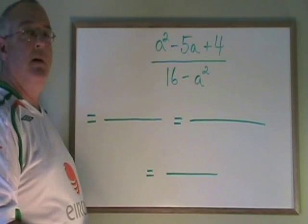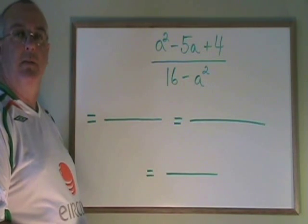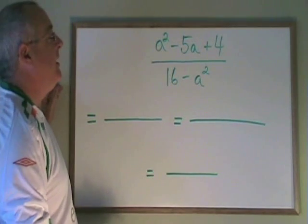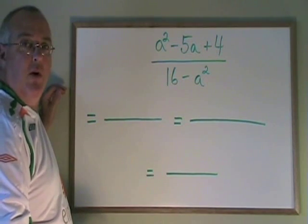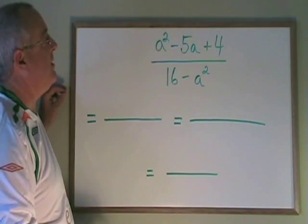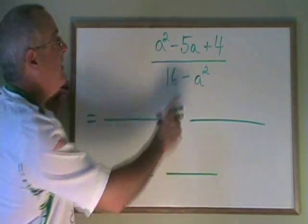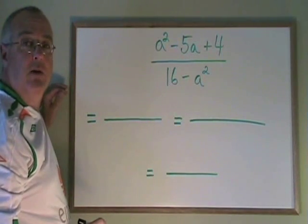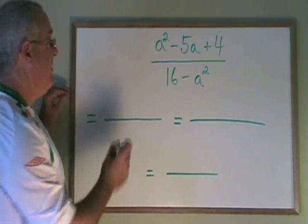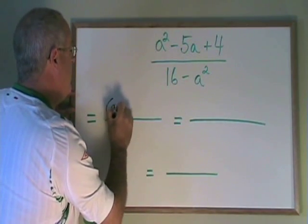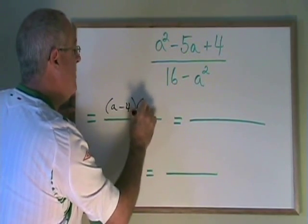Here's another example of an algebraic fraction that needs to be simplified. The first step is to factor. The numerator is a simple trinomial, so I ask myself: what two numbers multiply to give 4 but add to give negative 5? Those numbers are negative 4 and negative 1. So the factors of this trinomial are a minus 4, a minus 1.